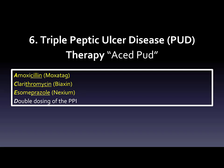A: Amoxicillin, brand name Moxatag. C: Clarithromycin, brand name Biaxin. E: Esomeprazole, brand name Nexium. D: Double dosing of the PPI.